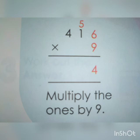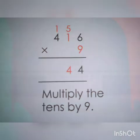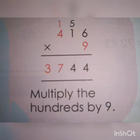So from 14, we have to write 4 under tens place, and 1 will be carried over to hundreds place. Now multiply hundreds place value 4 with 9. Four 9s are 36. 36 plus 1 equals 37, so we have to write 37 as it is under hundreds place. Therefore, we got the answer as 3,744 by multiplying 416 with 9.